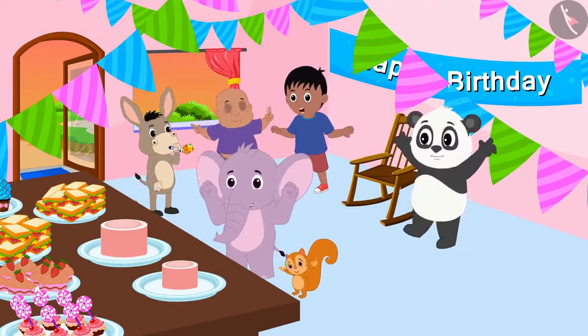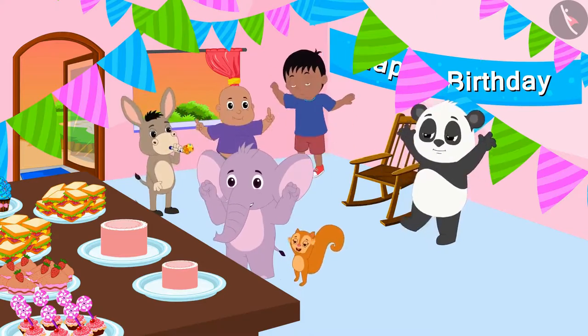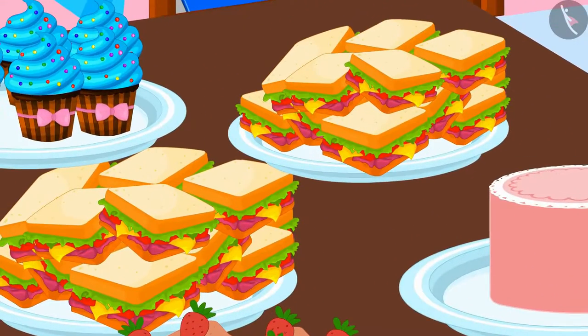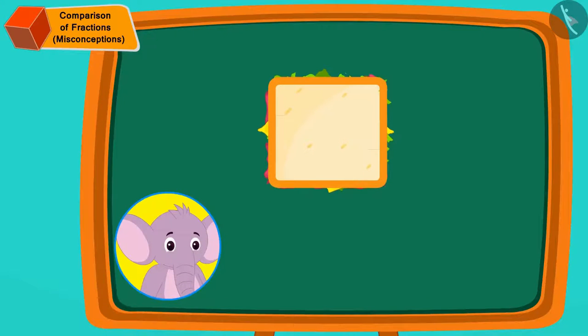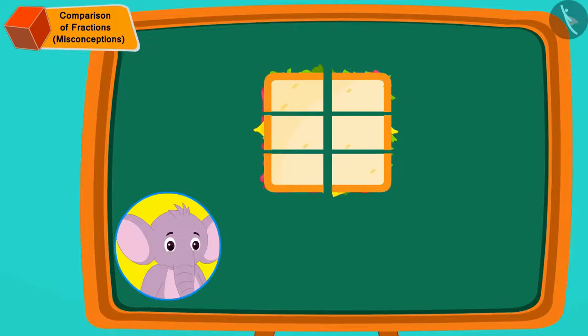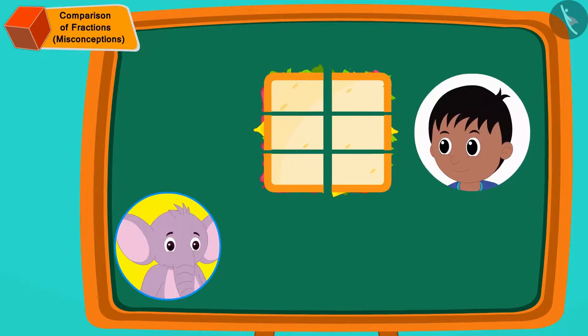Now, Appu and Chanda have made delicious sandwiches for all the party guests. Appu cut the sandwich into six equal pieces like this and gave Raju one piece or one-sixth part.